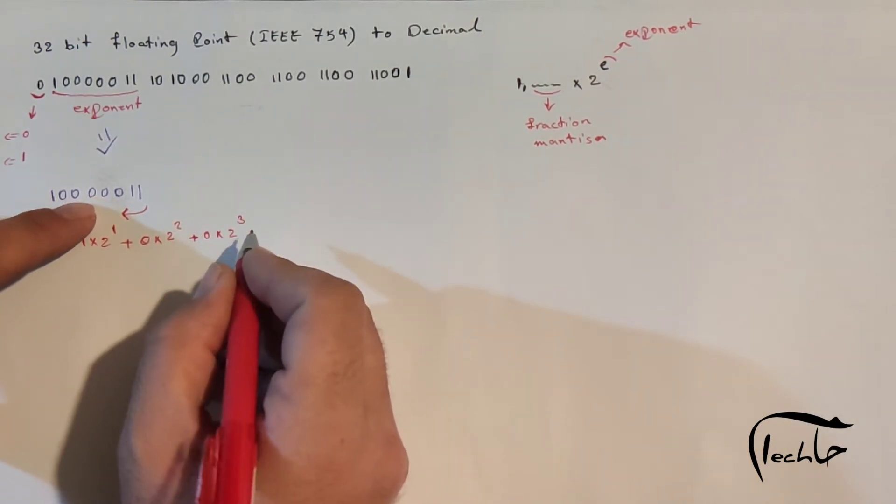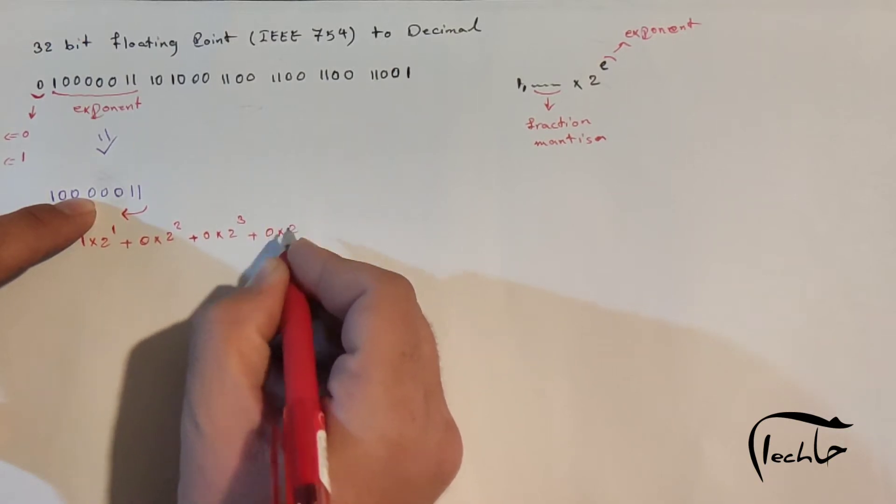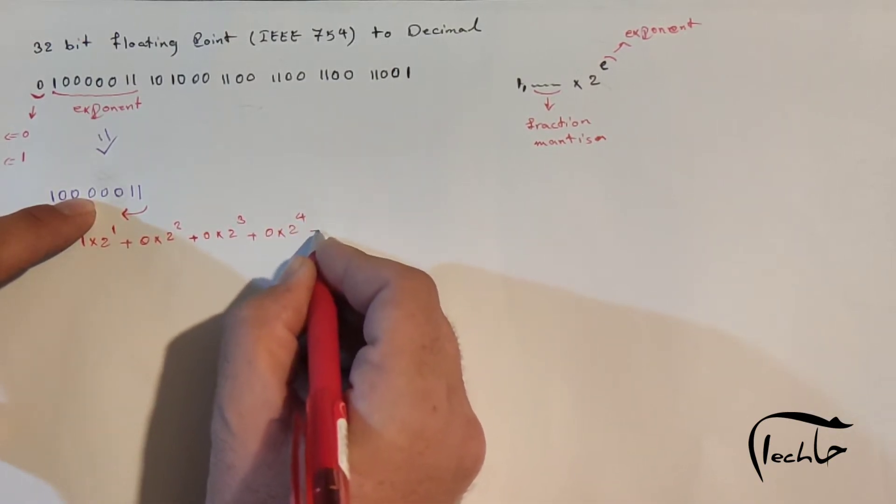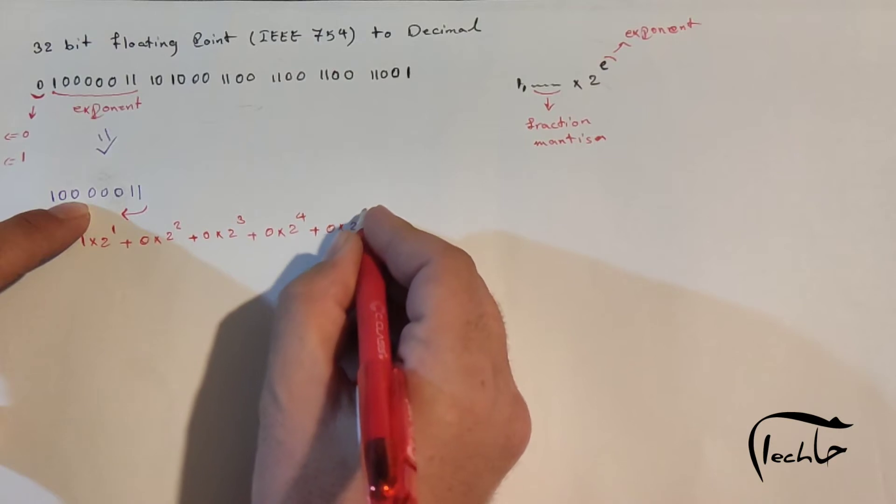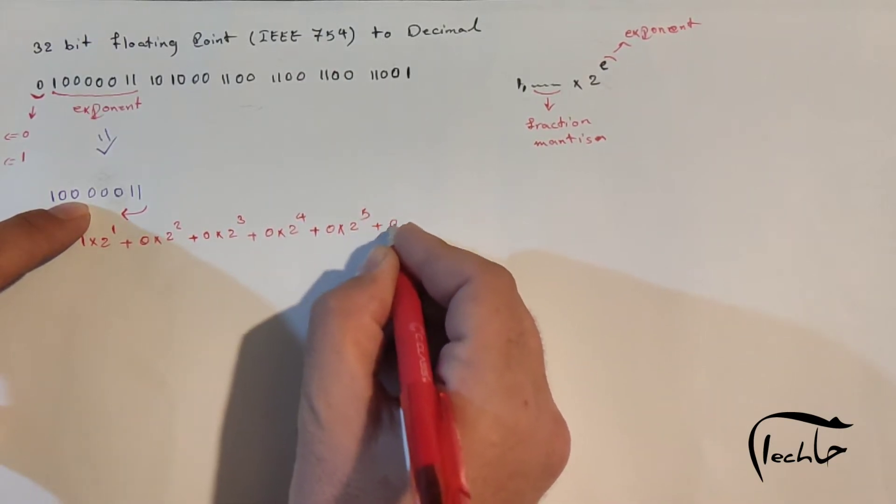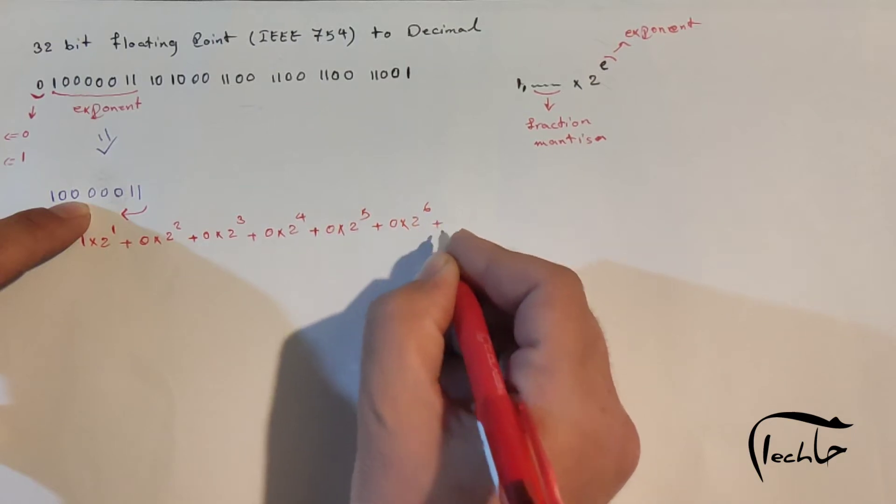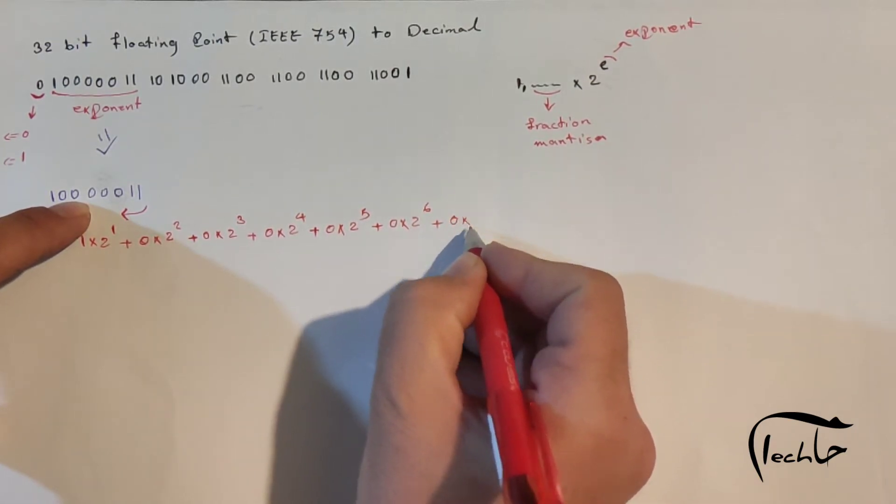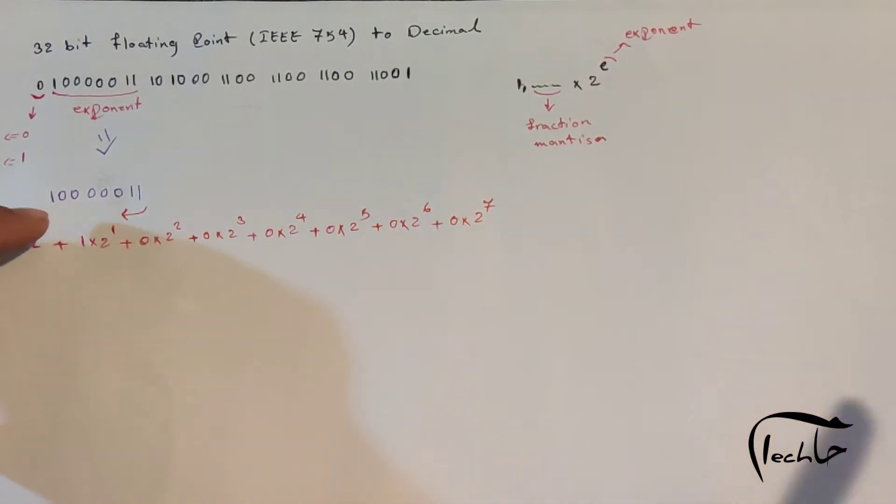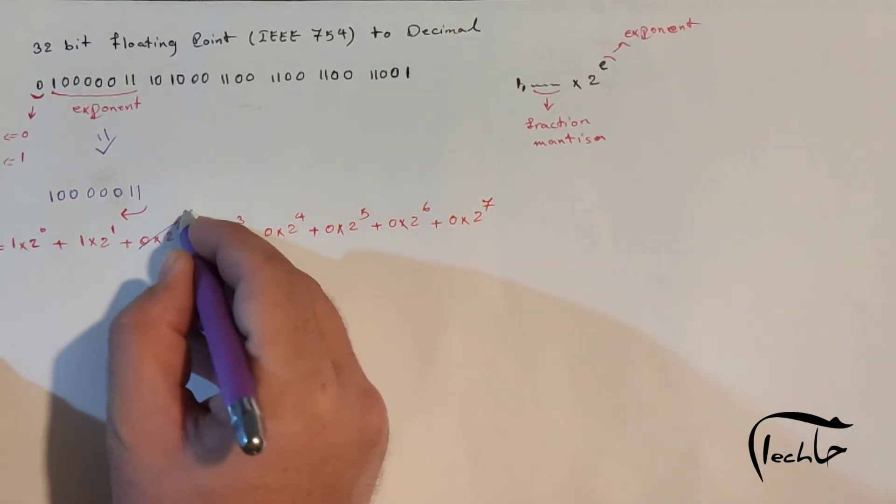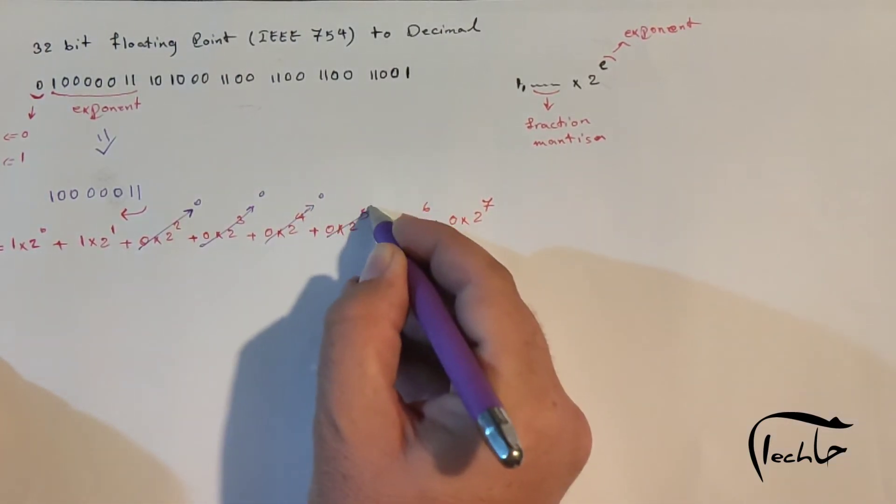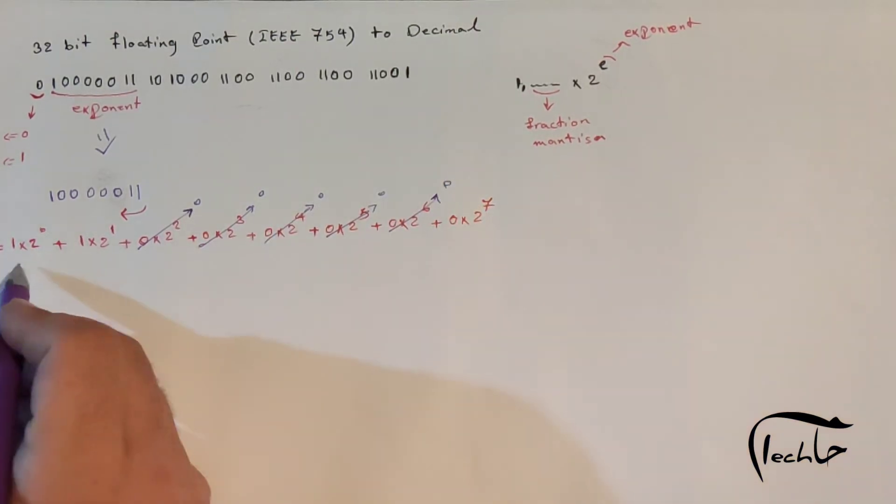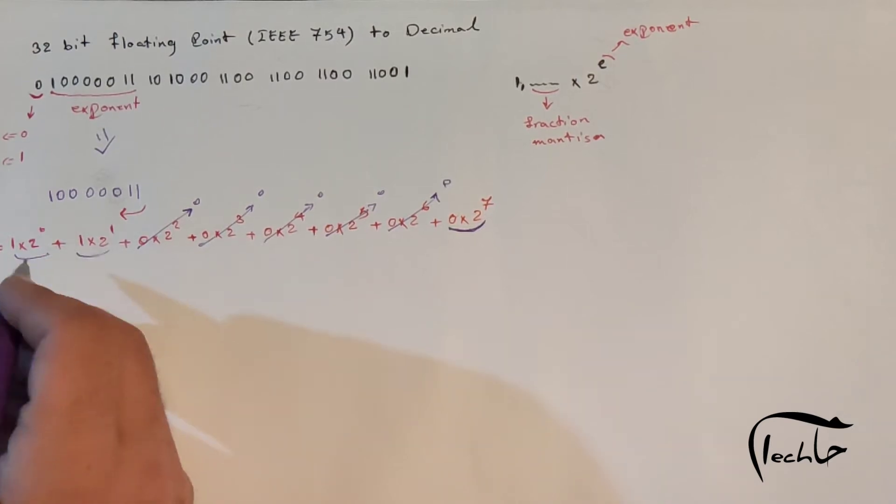Plus 0 times 2 power 4, plus 0 times 2 power 5, plus 0 times 2 power 6, plus 0 times 2 power 7.